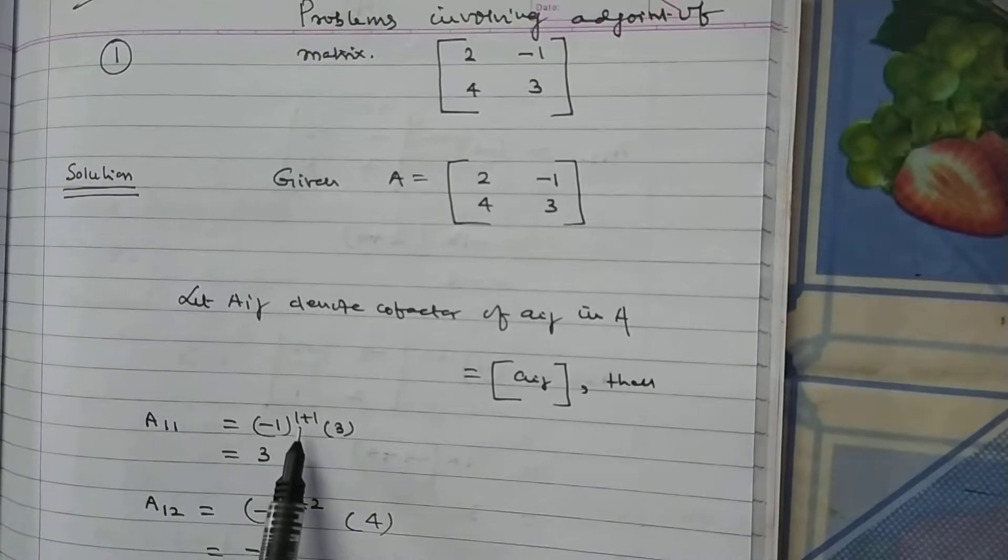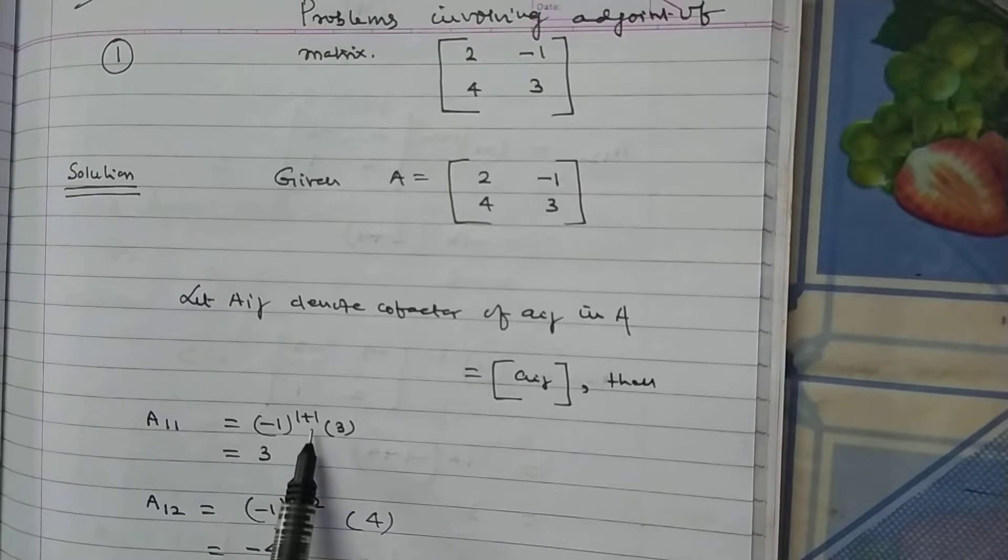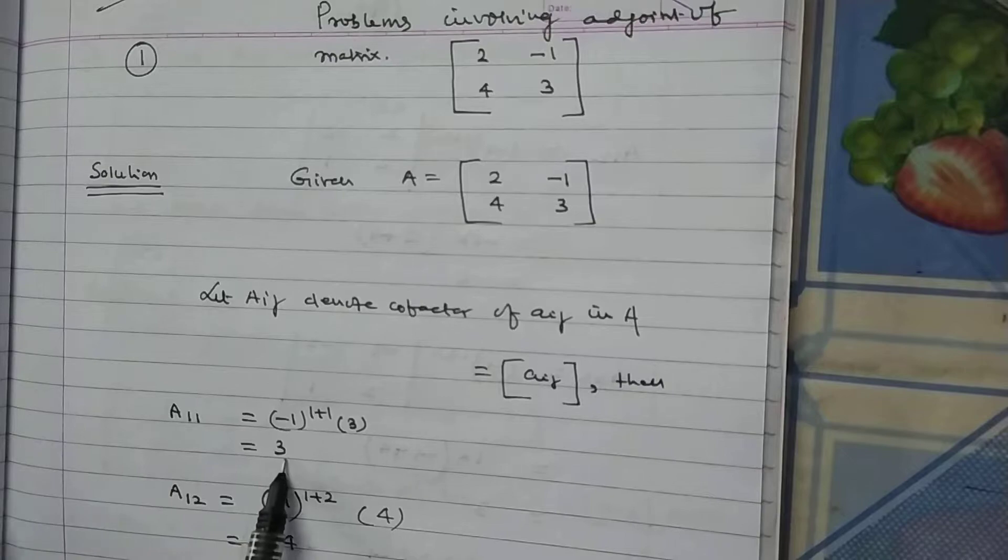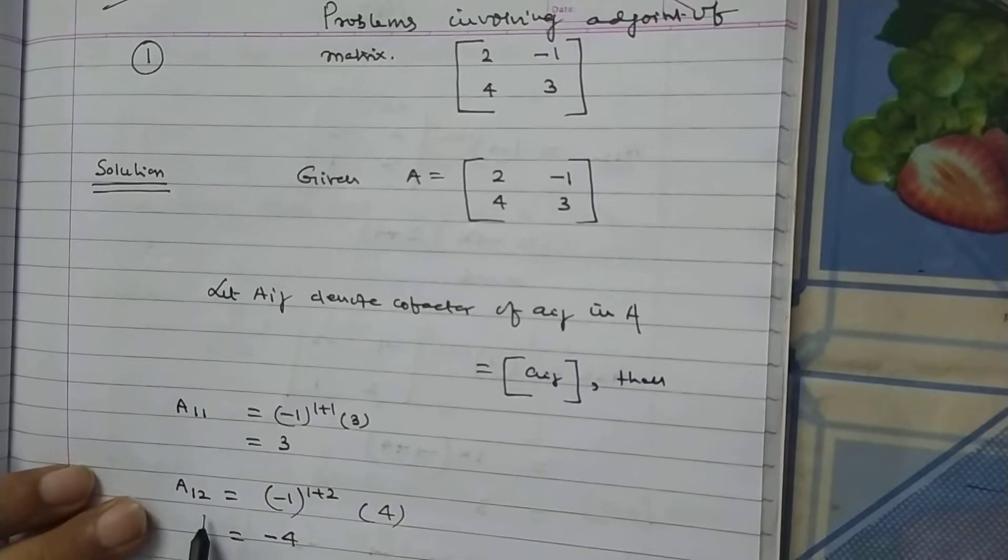So, minus 1 to the power 1 plus 1 and the remaining element is 3. So, it will be 3.